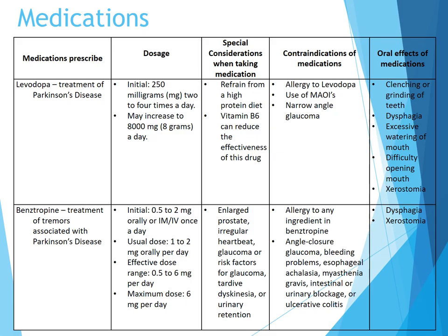Contraindications to Benztropine include any allergy to the ingredients in Benztropine, angle closure glaucoma, bleeding problems, esophageal achalasia, myasthenia gravis, intestinal or urinary blockage, or ulcerative colitis. Oral effects of this medication include dysphagia and xerostomia.